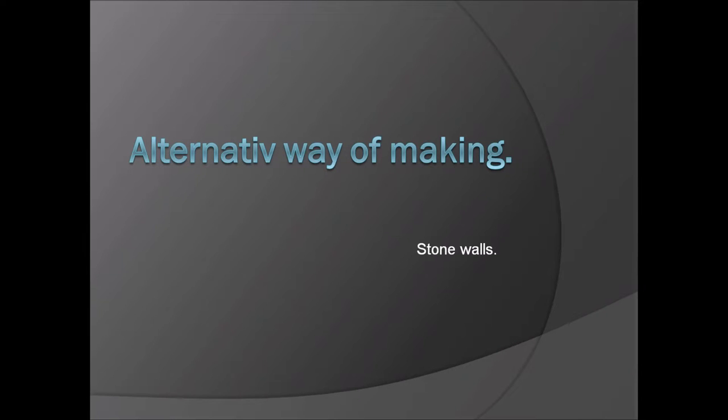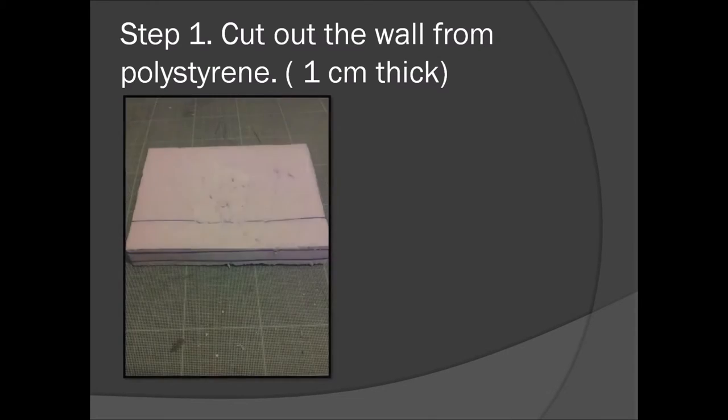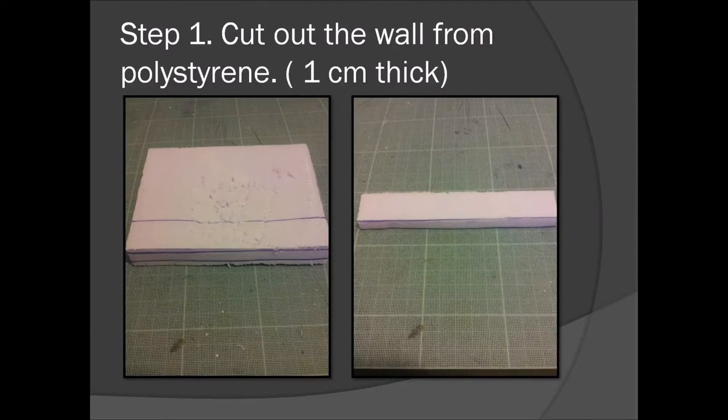I will now show you how to make another type of stone wall. Step one: cut out the wall from polystyrene. This time it should be about one centimeter thick.